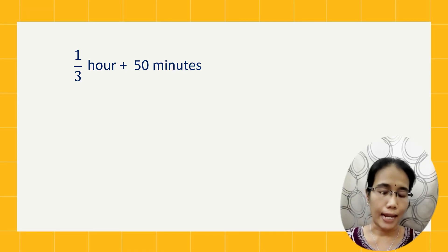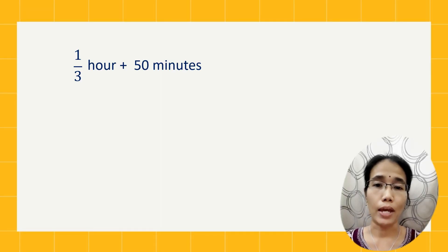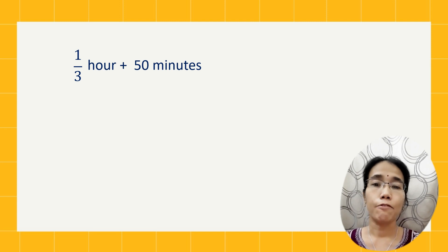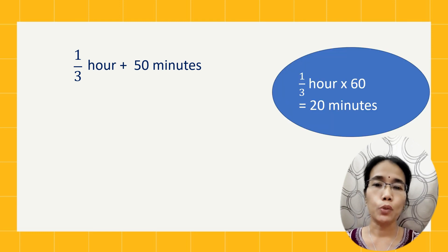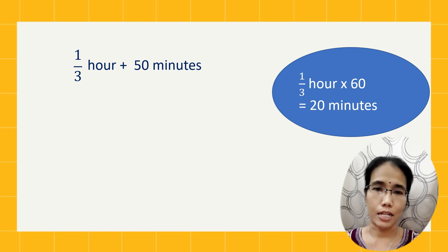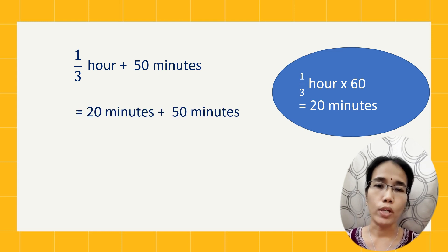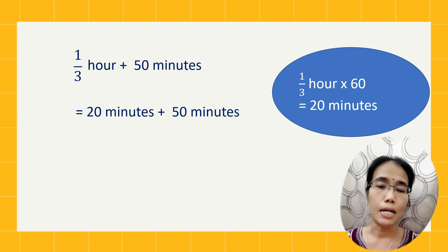Let's see the next example. We have one-third hour plus 50 minutes. Convert one-third hour to minutes — multiply by 60 and you'll get 20 minutes. Now 20 minutes plus 50 minutes: the answer will be 70 minutes.